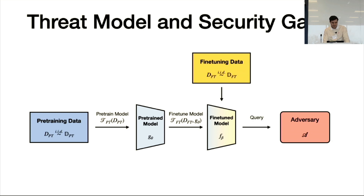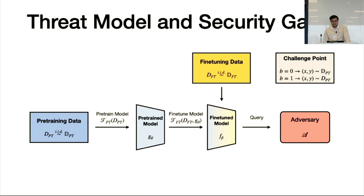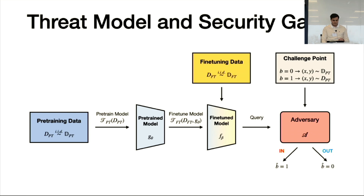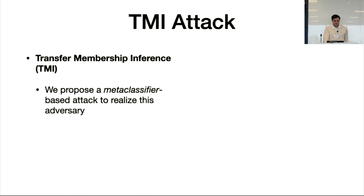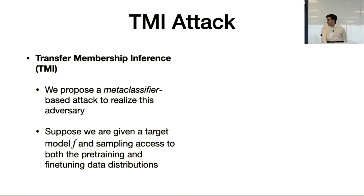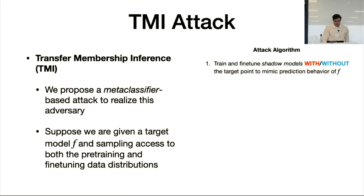Because fine-tuning adds a layer between pre-training and the adversary's query access, we need to slightly change the membership inference threat model. There is a pre-training dataset used to train model G — the model we want to extract information from. A third party can fine-tune G to produce model F, which the adversary queries. The challenger flips a coin: heads means sampling a point not in the training set, tails means sampling from the training set, and the adversary must determine which.